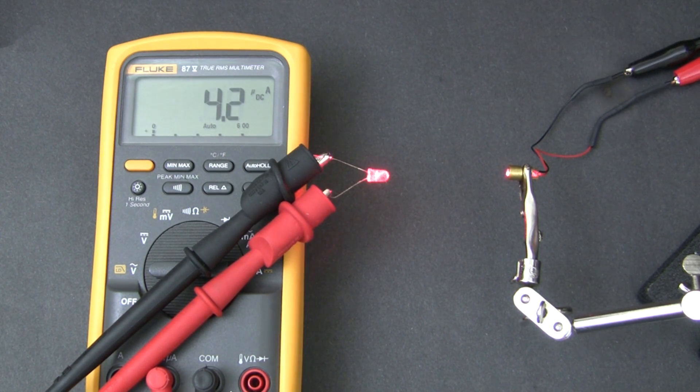But if we shine the laser onto the LED, it induces a current of about 4 microamps. That's a very small current, but it's enough to allow us to use the LED as a light sensor.